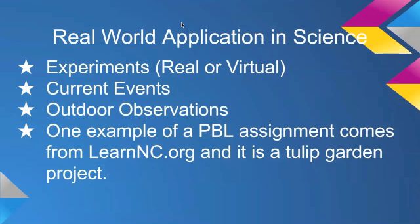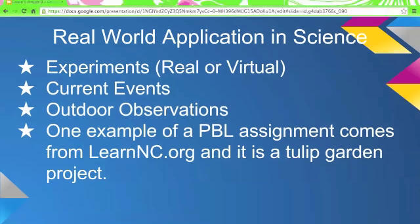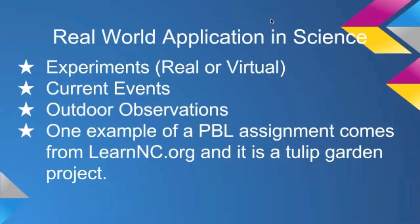Real-world application in science can be found in experiments — real or virtual — current events such as natural disasters going on around the world, and outdoor observations, which are a great way to get kids out of the classroom and into real life. One example of a PBL assignment from the UNC School of Education is a tulip garden project, in which kids plant their own tulip bulbs. This project prompts kids to ask about weather and seasons and is a great way to show kids how questions are more important than answers. That is the whole purpose of real-world application: for students to realize the importance of these questions and to engage them in their own learning.